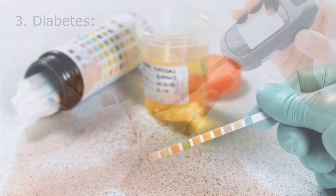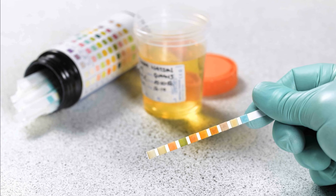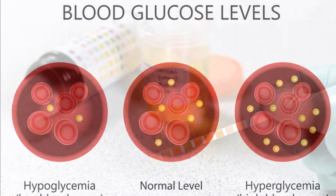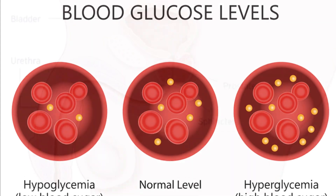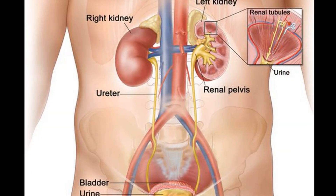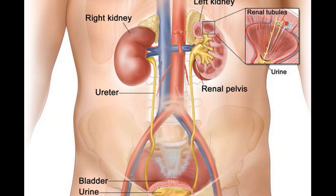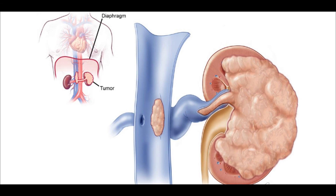Diabetes: Presence of glucose in the urine indicates that the person is suffering from diabetes mellitus. This is a disease in which the sugar level in the blood is much higher than normal, and the excess sugar is excreted out through the urine. Presence of blood cells in the urine may indicate an infection, tumor, internal bleeding or damage to the kidneys.